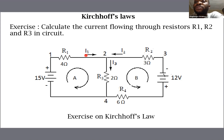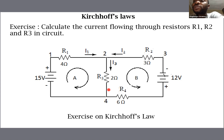Current I1 has been marked as the current flowing through this route. Current I2 has been marked as the current flowing through this route, while current I3 has been marked as the current that will flow through this route containing resistor R3.